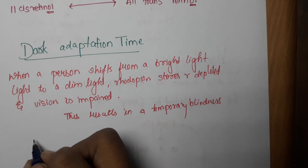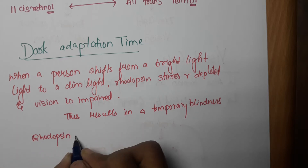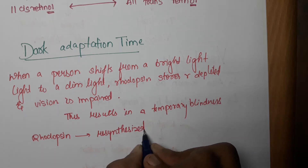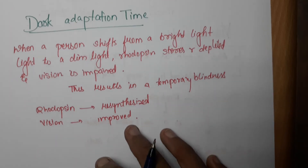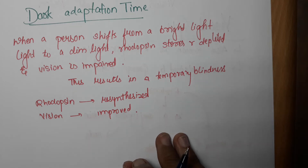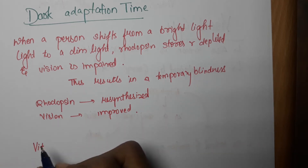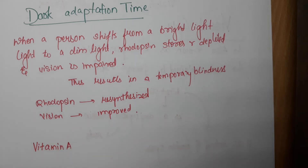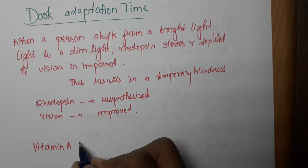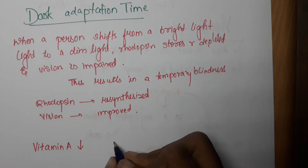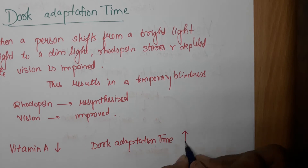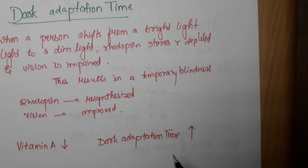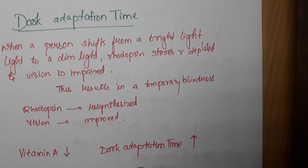This dark adaptation time lasts for a few seconds or milliseconds. After that, rhodopsin is resynthesized and vision improves. This dark adaptation time depends on the individual — specifically on the vitamin A level of the individual.